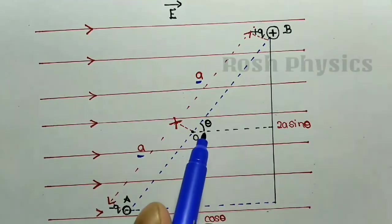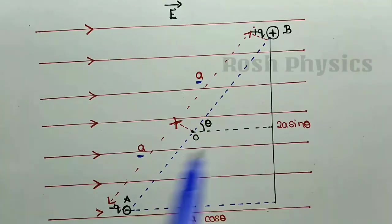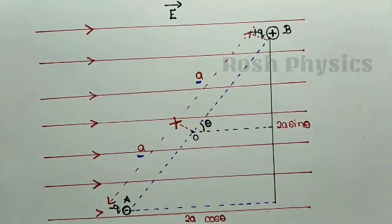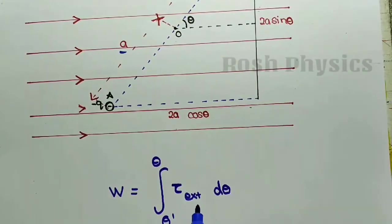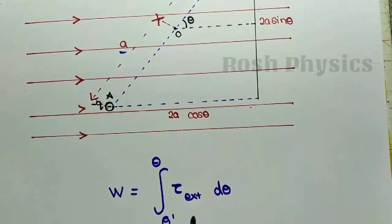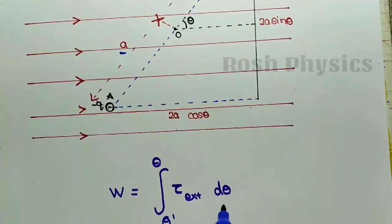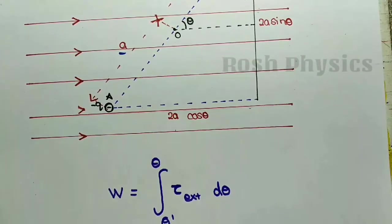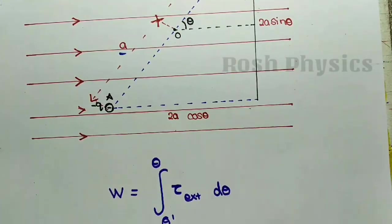By the formation of a torque, the angle of the dipole changes from θ' (theta dash) to θ (theta), where θ is the transferred angle. That change in angle is the work done by the external force, represented as W = ∫τ_external dθ, integrated from θ' to θ. The initial angle is θ' and the final transferred angle is θ.